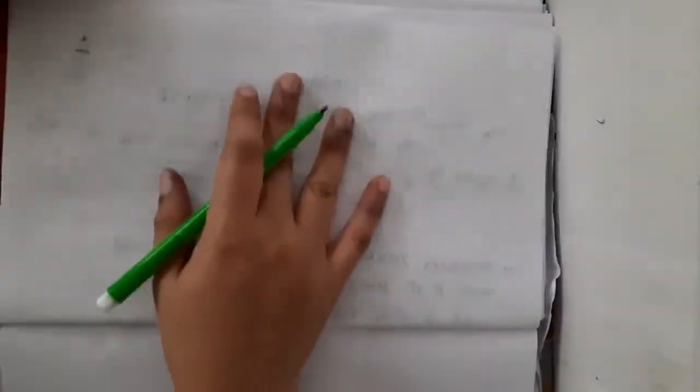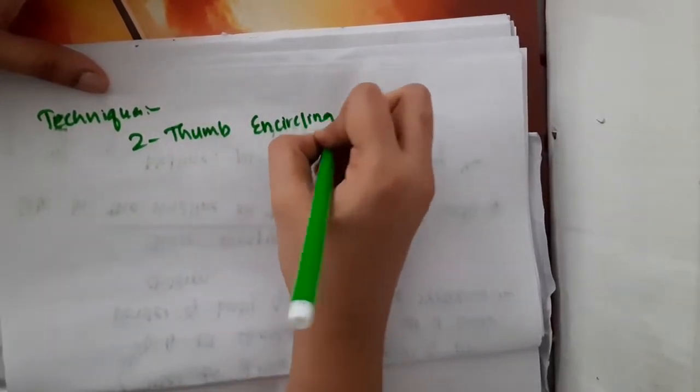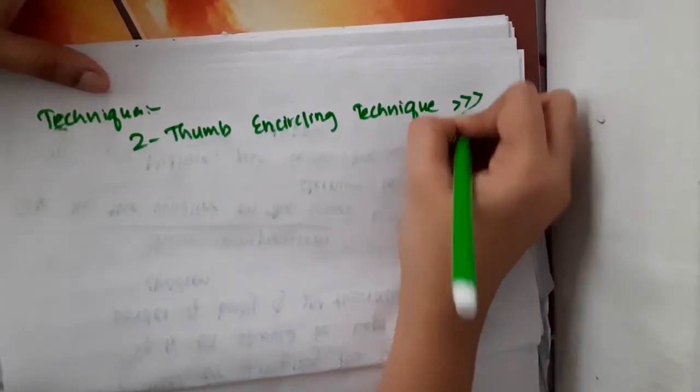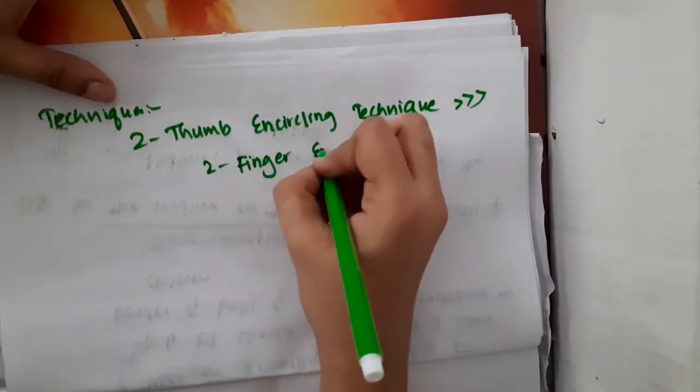What are the techniques used for chest compression? The techniques used in the neonate for chest compressions are two thumb encircling technique, which is actually preferred over two finger technique.